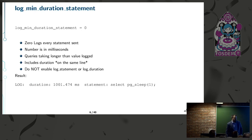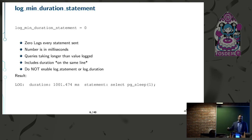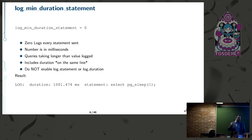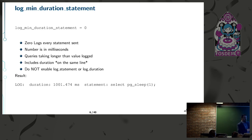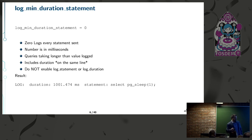log_min_duration_statement: the first thing is to get these queries into the log file. If you set it to zero, you'll log every single query that comes into the system, which is great. However, on a highly active system, the time taken to log the query can often be much longer than the query itself, creating a backlog. On a very high-rate system, don't set it to zero — set it to something above zero.